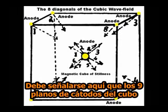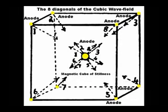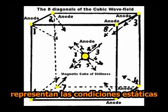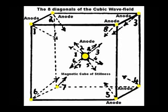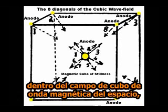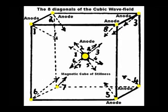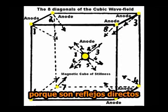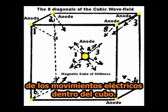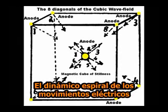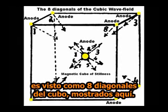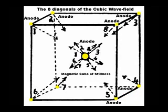It must be noted here that the nine cathode planes of the cube represent the static conditions of electric motions within a magnetic cube wave field of space. Because they are direct reflections of the electrical motions within the cube, the dynamic spiraling electric motions are seen in the eight diagonals of the cube as pictured here.